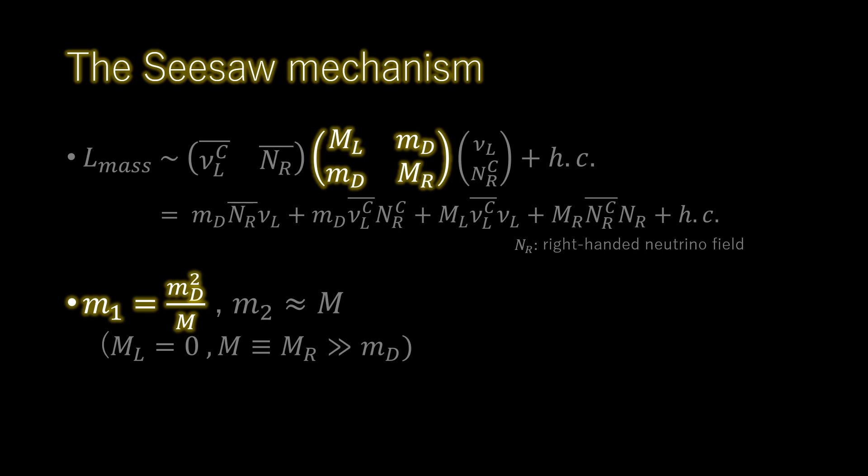There is a rather beautiful resolution of this problem, which goes by the name of the seesaw mechanism. Because the right-handed neutrinos carry no charges, they can acquire a mass from another gauge invariant term in the Lagrangian, known as a Majorana mass term.